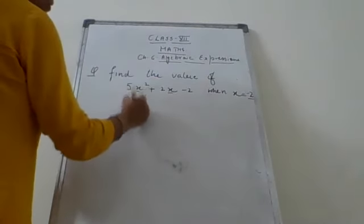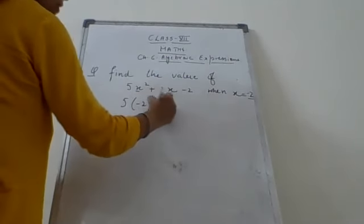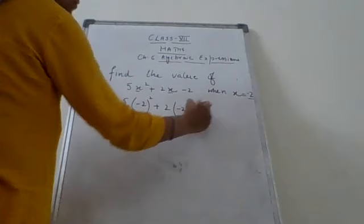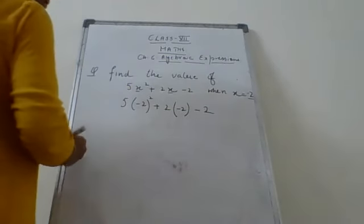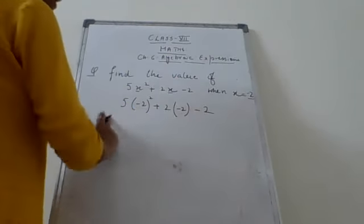So first we will write 5 multiply minus 2 squared plus 2 multiply minus 2, then minus 2. This is the constant term. No variable is there, so it will be written as it is.